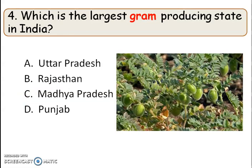Next question: which is the largest gram producing state in India? The right answer is Madhya Pradesh. Gram is a type of legume and is a pulse crop, so Madhya Pradesh is the largest gram producing state in India.